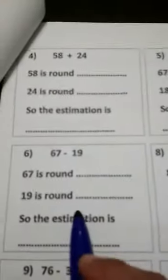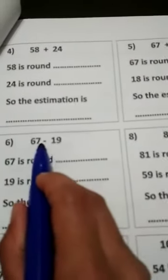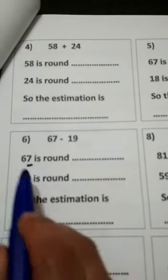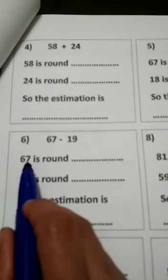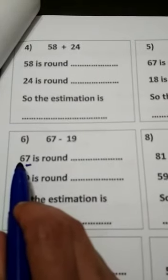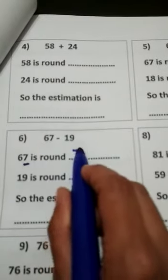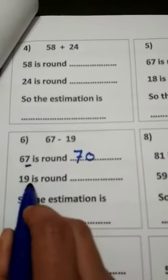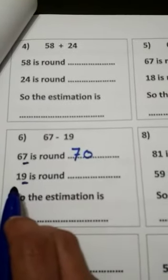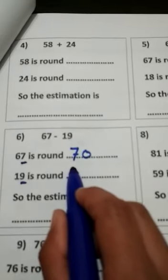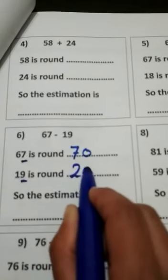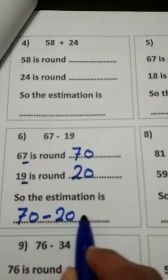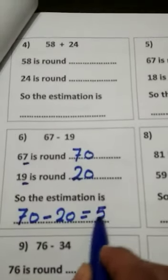Now we have a subtraction problem: 67 minus 19. For 67, the ones digit is 7 — it's strong, so 67 rounds to 70. For 19, the ones digit is 9 — it's strong, so 19 rounds to the 10 after, which is 20. My estimate is 70 minus 20, which equals 50. Thank you.